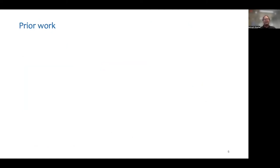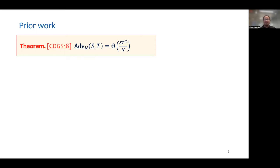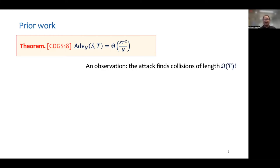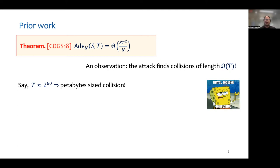Corretti et al. gave a tight characterization of this advantage in terms of s and t. They proved an asymptotic upper bound of st² / n on the advantage of any st-adversary, and also gave an attack that achieves this advantage. However, their attack finds collisions of length nearly t. If an attack takes time t = 2^60, it means that the collision found is petabytes long, and collisions that long are not really useful for any practical purposes.